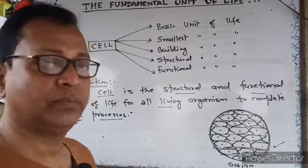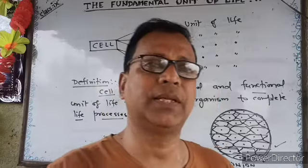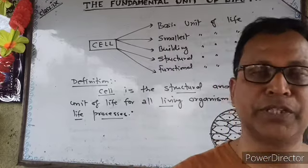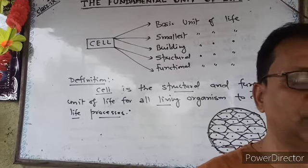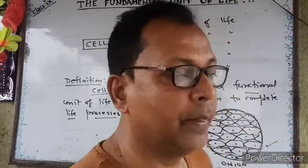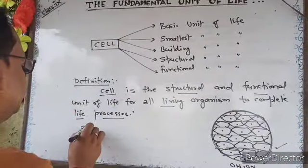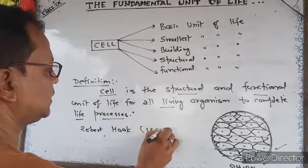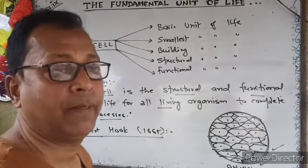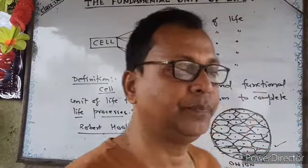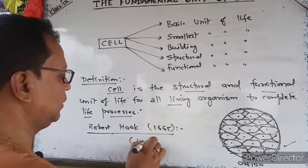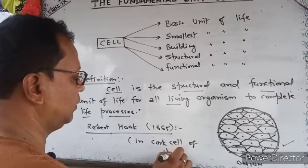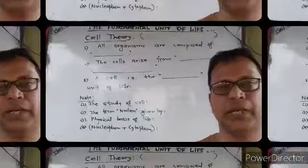Who first discovered and observed the cell? Robert Hooke discovered the term 'cell' in 1665, observing it in cork cells from a plant. He is credited with discovering and observing the cell. This leads us to cell theory.